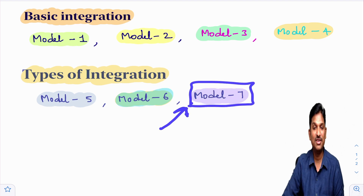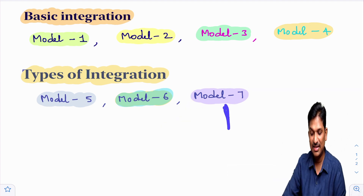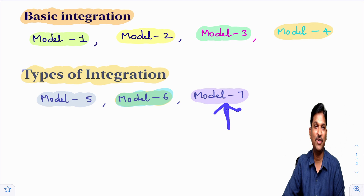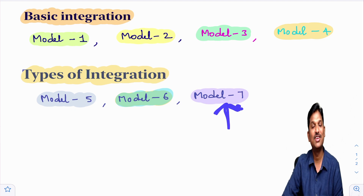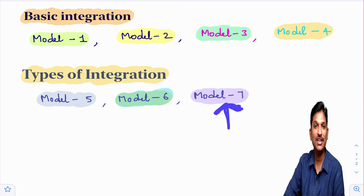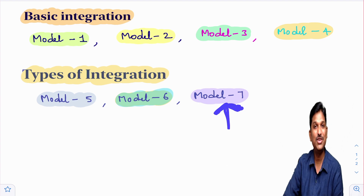Model number 7 is integration by using partial fractions. I find this exercise difficult, but I have divided the problems type-wise — total four types. Type 1 is when the given function is a proper rational function and the denominator contains non-repeated linear factors, and so on. As we do all problems in order, model-wise, you won't feel it is difficult — that is my guarantee.